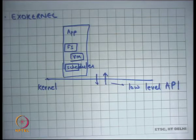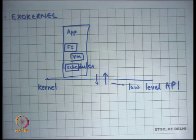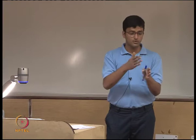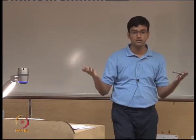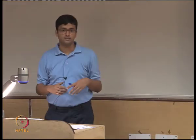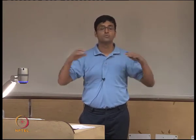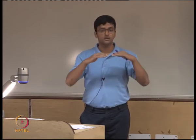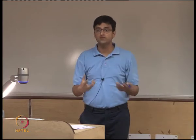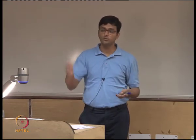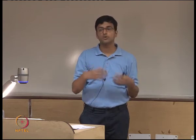Similarly, in the file system case, the application can choose what file system it likes. Instead of exposing open, read, write, close calls to the application, how about exposing the device interface — like the disk interface — to the application? You tell the application it has access to a raw disk, so it can write to sector number 10 and choose what layout it wants. Sharing between processes can be built on top of that. At the end of the day, the kernel is not involved in implementing the file system — only in providing an abstraction that allows the application to build a file system on top of it. That makes things very configurable.